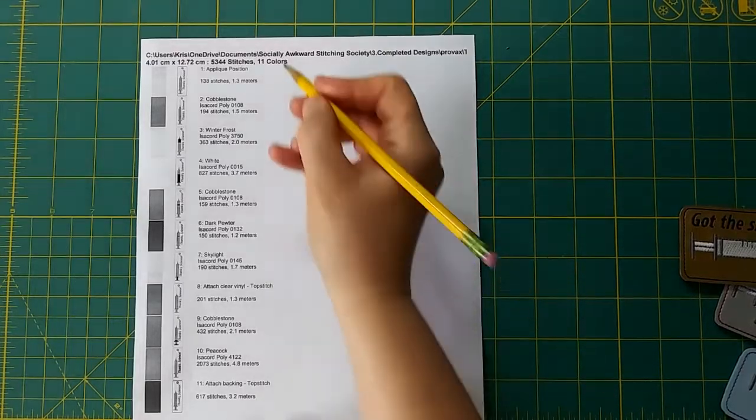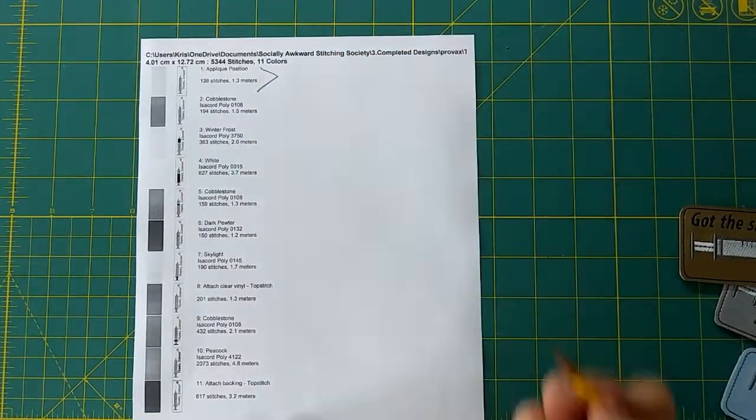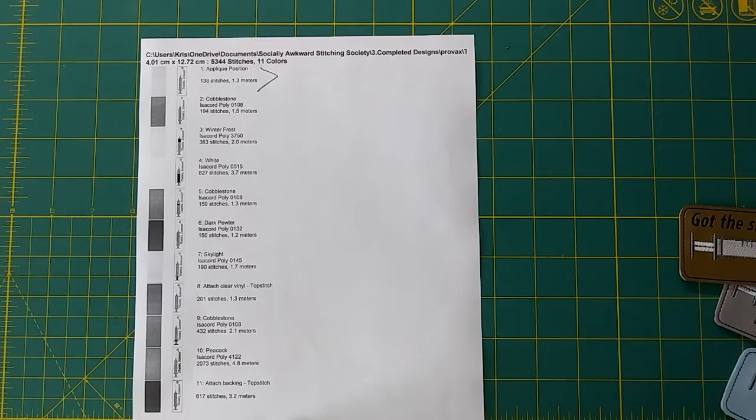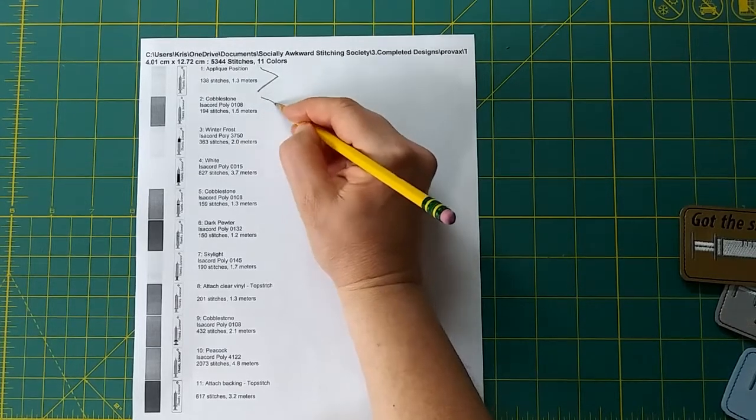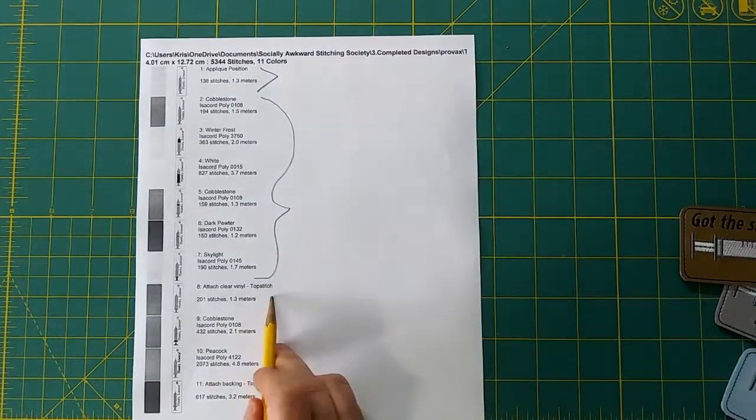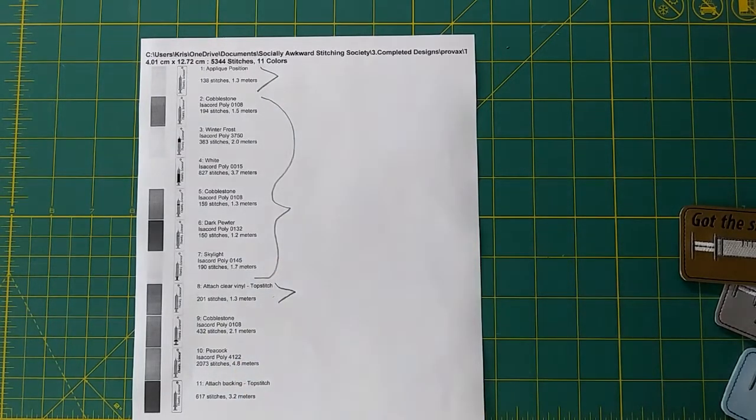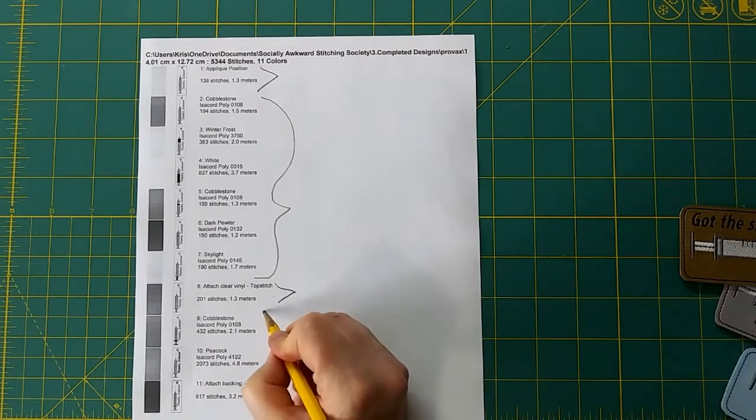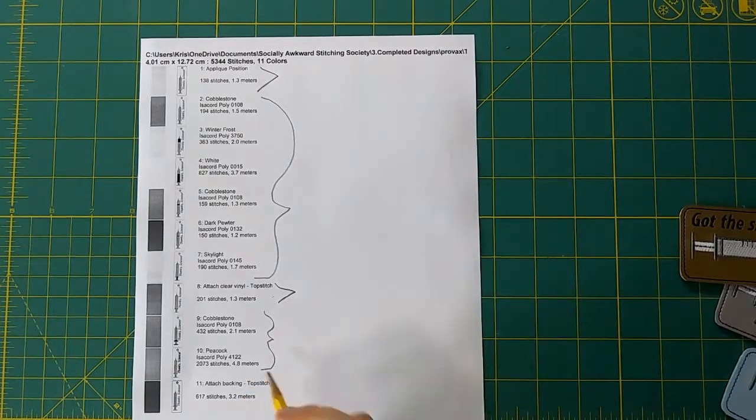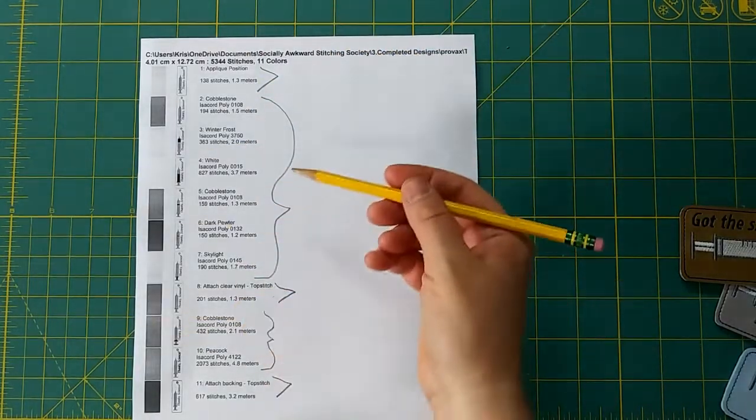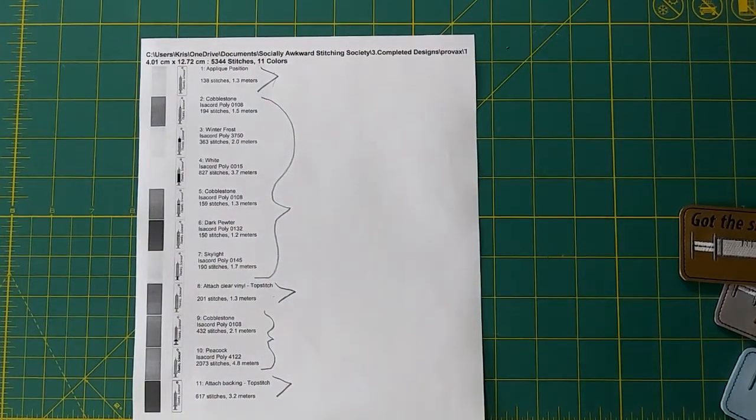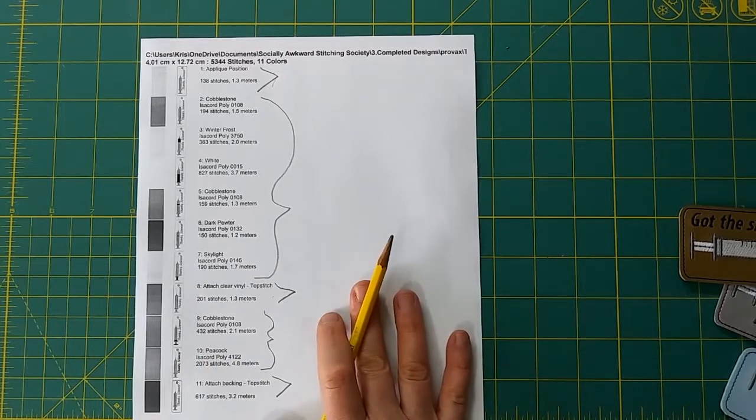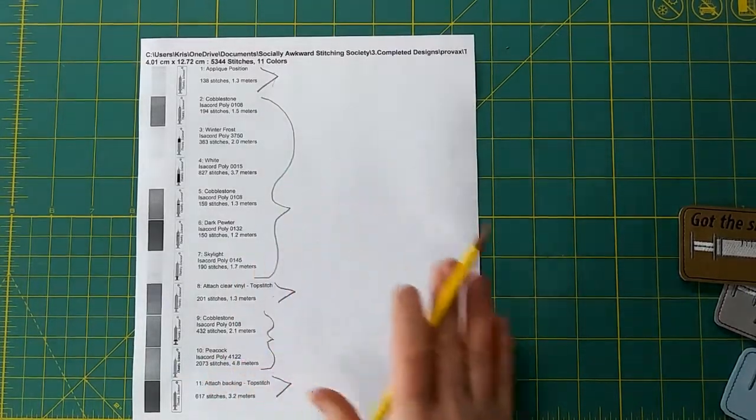Our very first stop says applique position and that is what we run on our stabilizer so we know where to put our vinyl. Once we have our vinyl down we're going to do all of these stops until we get down to attach clear vinyl, and then we're going to stop and do something and then we have the last two stops before we attach the backing. So I always like to mark when it's something I need to do besides just changing the thread color.